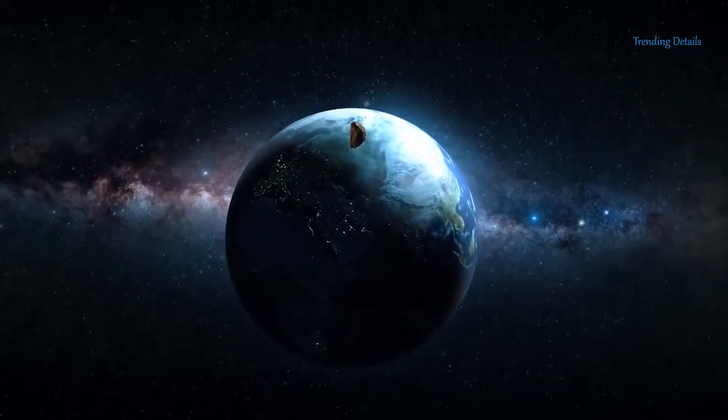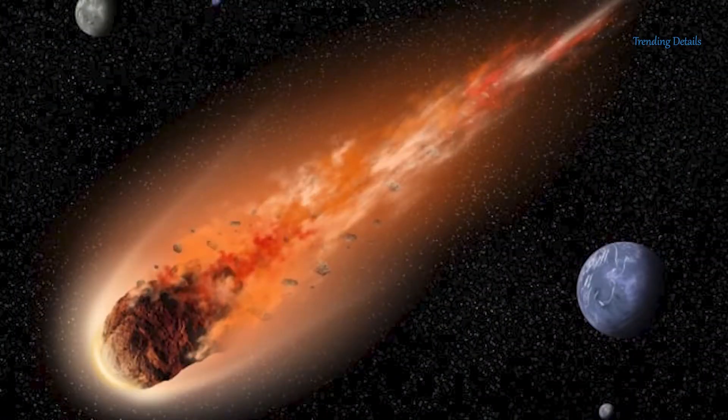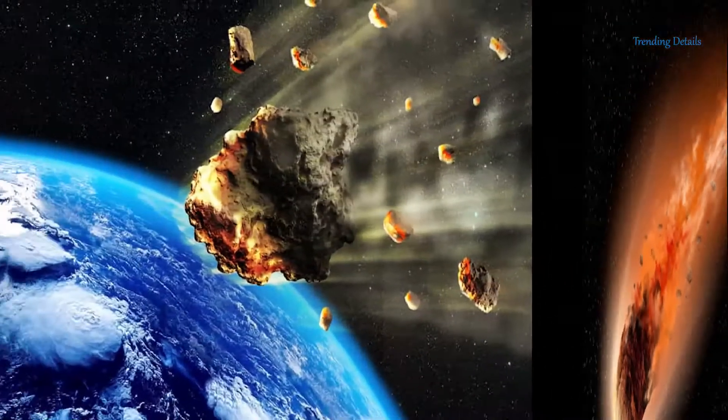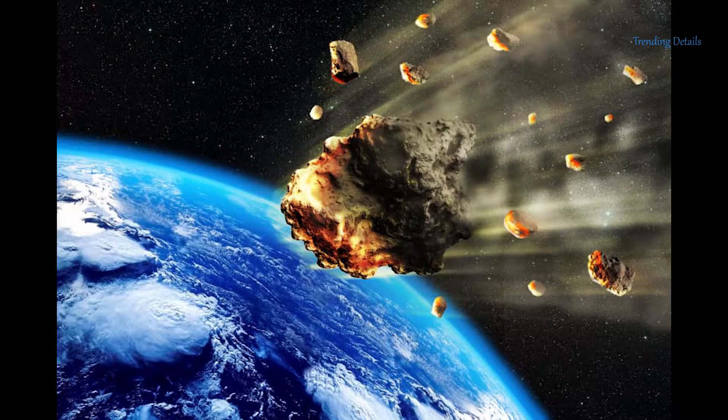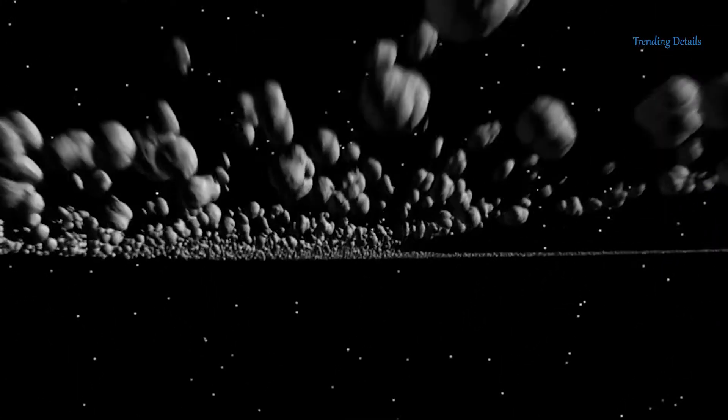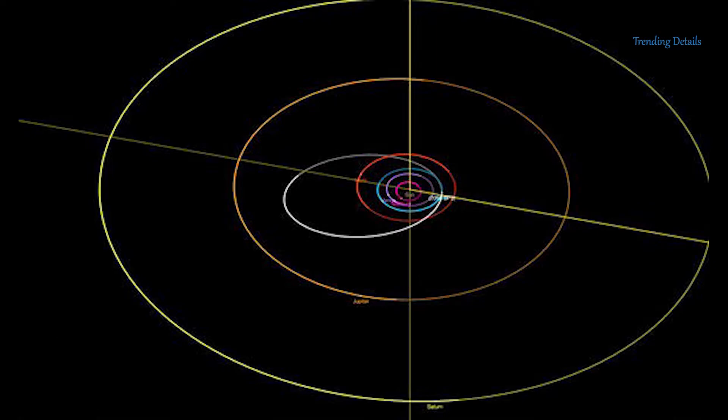According to NASA, the space rock will fly by at a distance of 0.97 lunar distances. One LD is the distance from Earth to the Moon. In other words, 2019 SP-3 will miss Earth by just 231,690 miles, whizzing past at 8.7 kilometers per second.